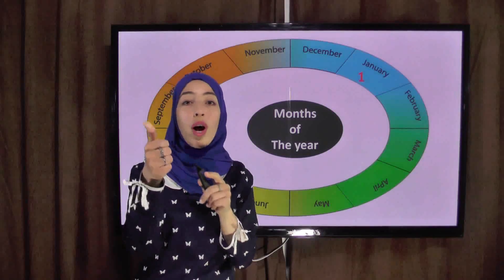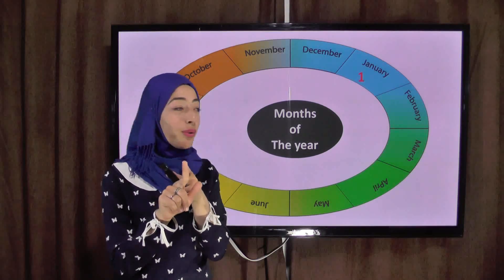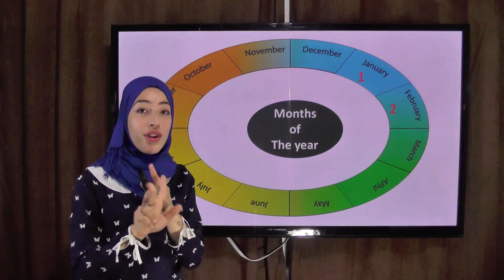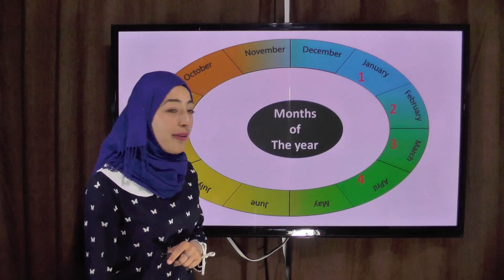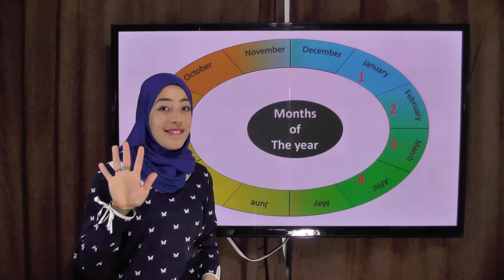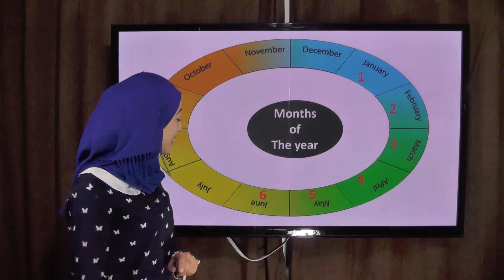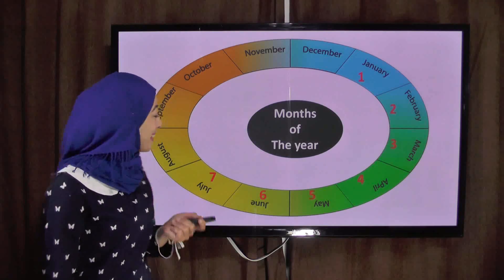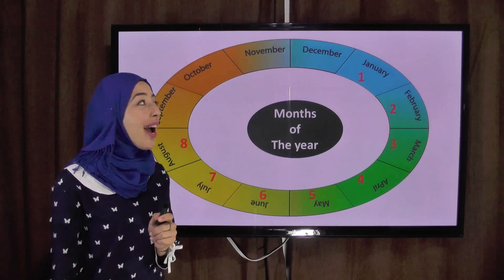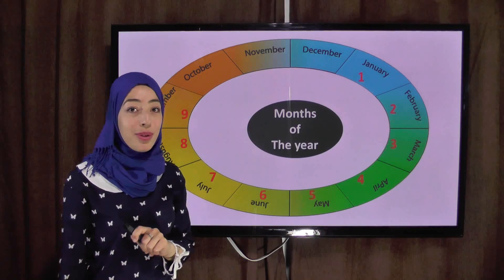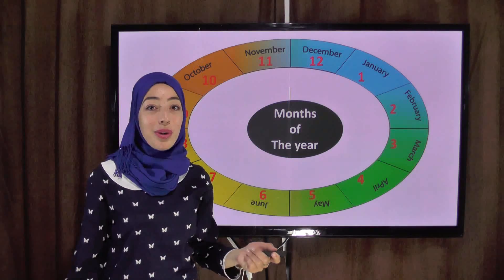January is number one. February is number two. March is number three. April is number four. May is number five. June is number six. July is number seven. August is number eight. September is number nine. October is number ten. November is number eleven. December is number twelve.